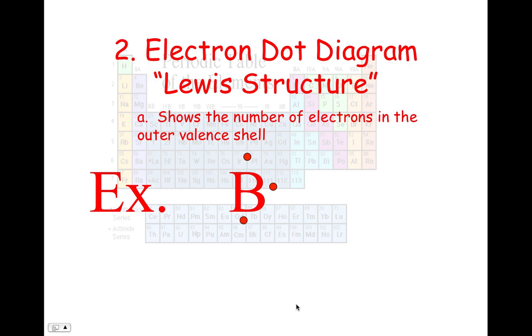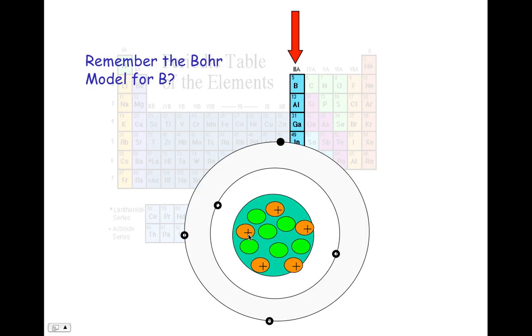Let's move on to my last diagram, which is my electron dot structure, also known as my Lewis structure. The Lewis structure shows the number of electrons in the outer valence shell. We've already done the Bohr diagram of boron. Now we're going to do the electron dot diagram of boron. The B represents whatever element you're doing. If it has two letters, you write both letters down. It shows the number of outer valence electrons. We've got one, two, three. If you guys remember, boron is in group number three.